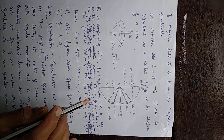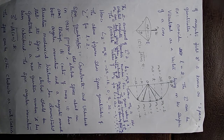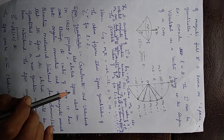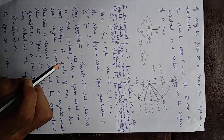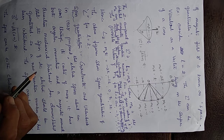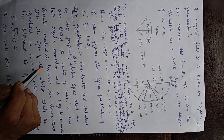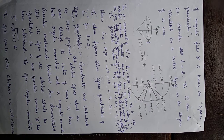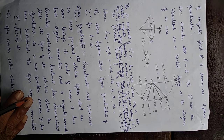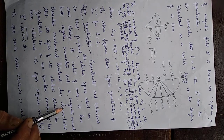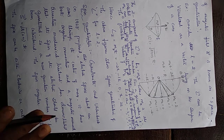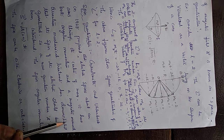Space quantization is one feature introduced by the vector atom model. The second feature added is spin quantization. The electron spin concept was introduced by Goudsmit and Uhlenbeck in 1925. According to their hypothesis, electrons, along with their orbital motion, also possess spinning motion. They spin about an axis through their center of mass. Because of this spinning motion, electrons possess spin angular momentum and magnetic moment.